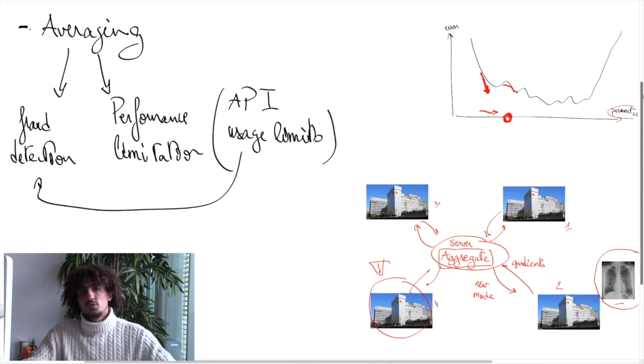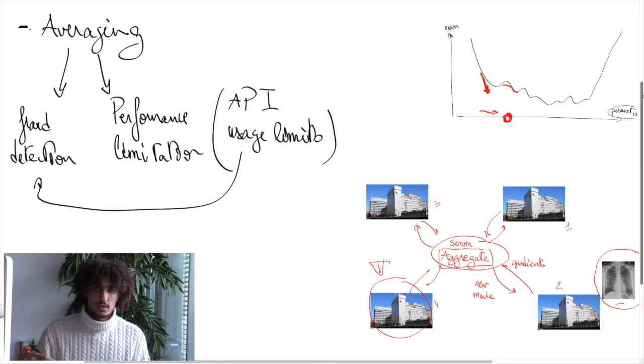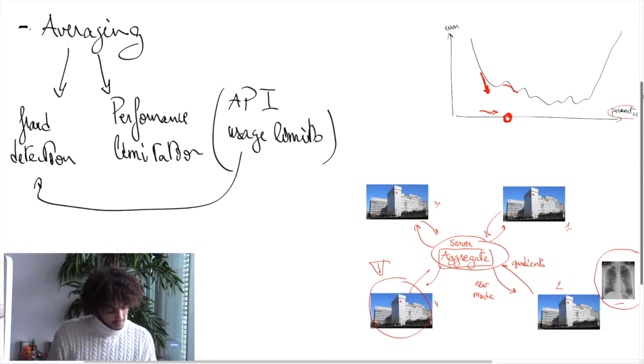In our work, we want to do distributed machine learning in a robust manner, so we won't take averages and we don't want to spend work detecting fraudulent behaviors or limiting how much gradients a single worker can send.